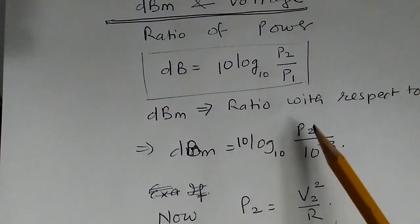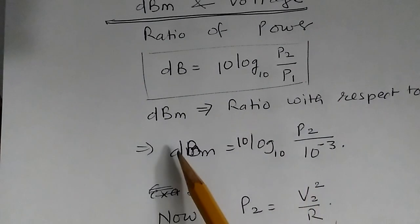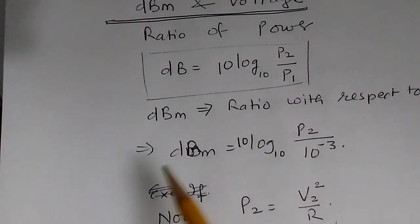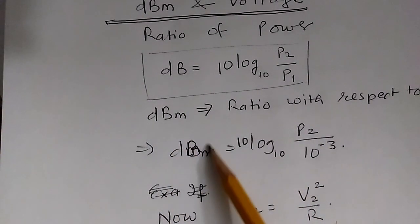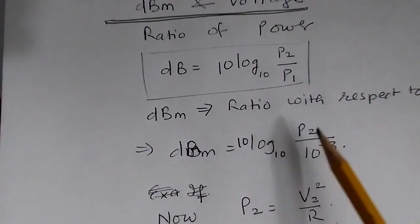dBm is related to power as 10 log₁₀(P2 / 10⁻³). That means, if we are given P2 in watts, we can find its value in dBm, or if given a power in dBm, we can find P2.